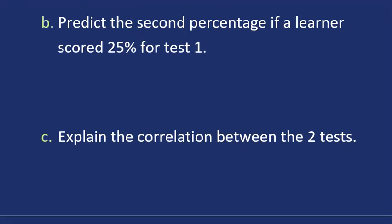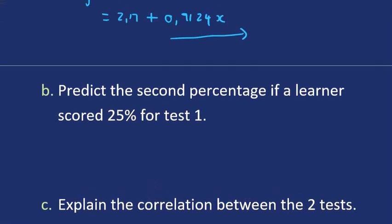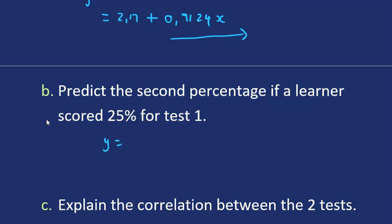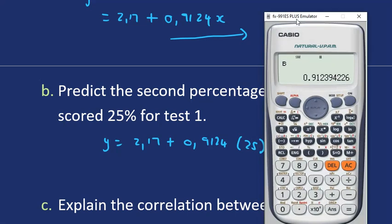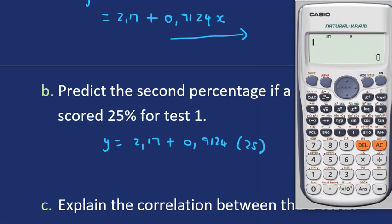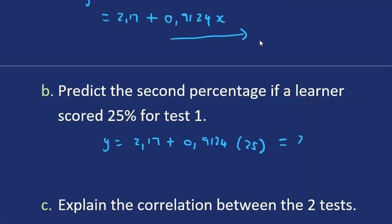Let's go to the next question: Predict the second percentage if the learner scored 25 for test one. We can use that regression line. We know the regression line is 2.17 plus 0.9124x. So let's substitute 25 to make this prediction. So this will be 24.98.